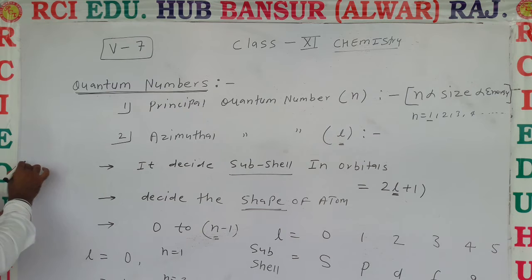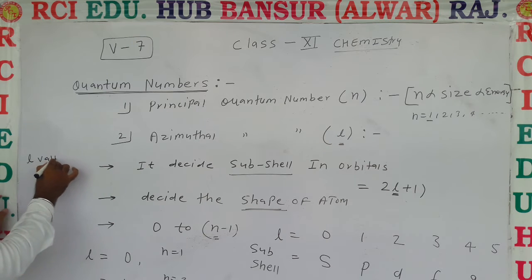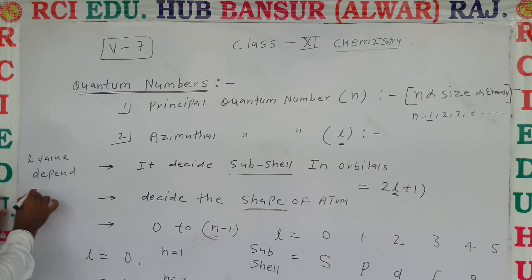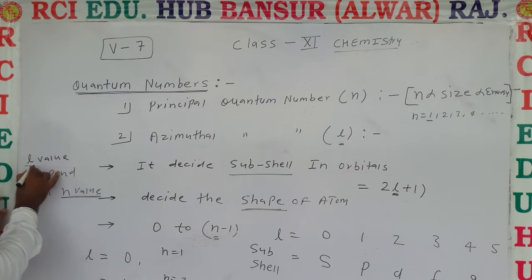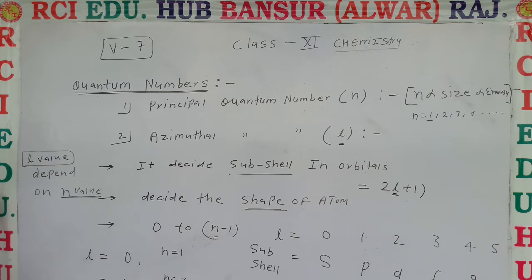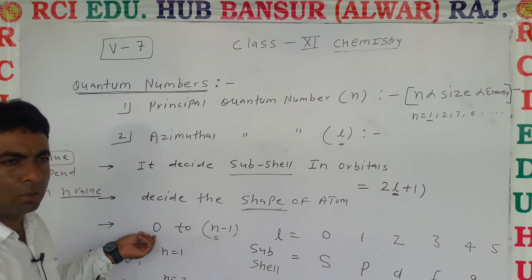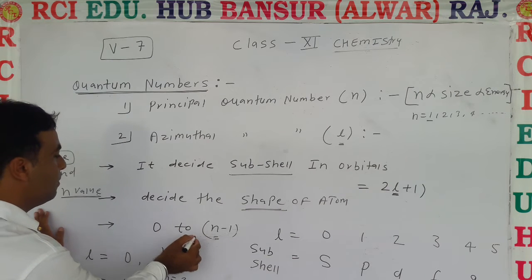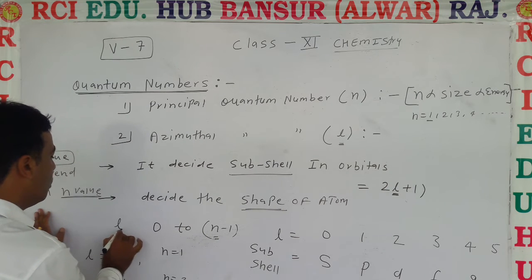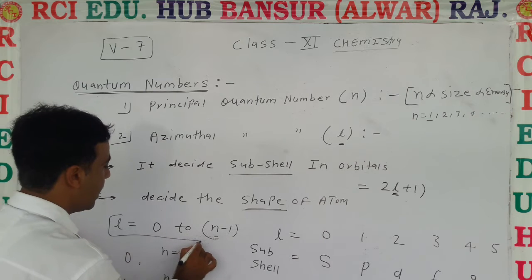You can see that the l value depends on the n value. If you know n, you can determine l. The relationship between n and l is: l ranges from 0 to n minus 1. So based on the n value, you can determine the corresponding l values.